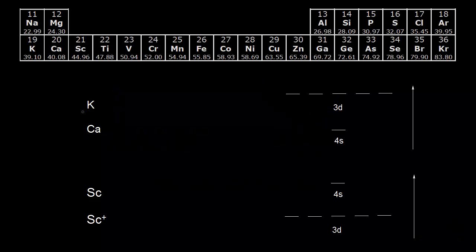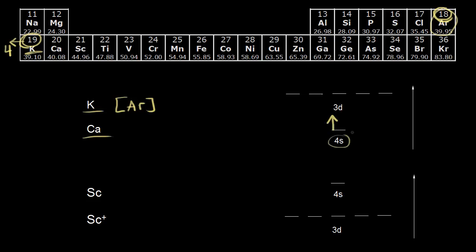We've already looked at the electron configurations for potassium and calcium, but let's do it again quickly because it's going to affect how we think about the d orbitals. Potassium is in the fourth period. Using noble gas notation, we work backwards and the first noble gas we hit is argon. Argon has 18 electrons and potassium has 19, so that extra electron goes into a 4s orbital because for potassium, the 4s orbital is lower energy than the 3d orbitals.